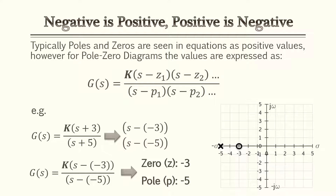To express values on the plot, consider an example with s plus three for a zero and s plus five for a pole. To fit the standard form, these become s minus negative three and s minus negative five, because a negative times a negative gives a positive. So the pole is at negative five and the zero is at negative three, and since these are real numbers they go on the real axis.